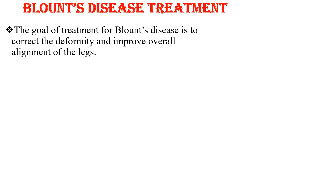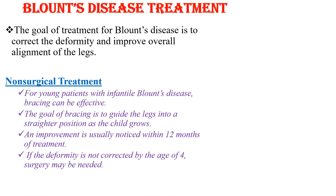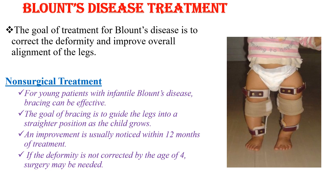Regarding treatment, the goal is to correct the deformity and improve overall alignment of the legs. There are two types of treatment. The non-surgical treatment is for young patients with infantile Blount's disease, done by bracing. Bracing is effective for the infantile type and its goal is to guide the legs into a straighter position as the child grows. Improvement is usually noticed within 12 months of treatment, and if the deformity is not corrected by age 4, surgery may be needed.